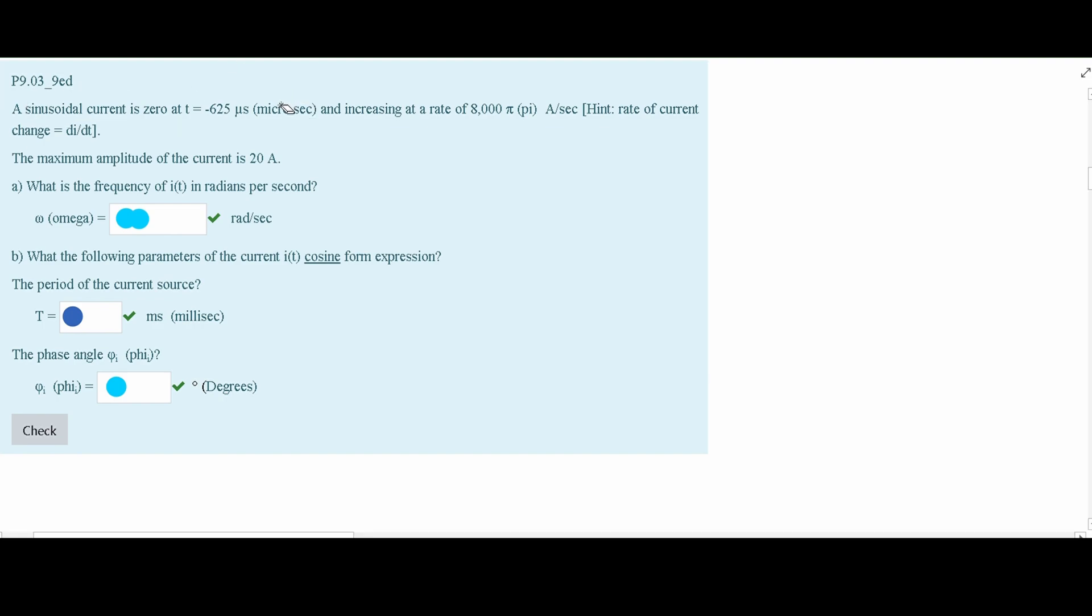And it is also increasing at a rate of 8,000 pi. Now, the rate of current change, or rate of increasing, is di over dt. We are asked to find the frequency of it in radians per second, and that's what we're going to do.